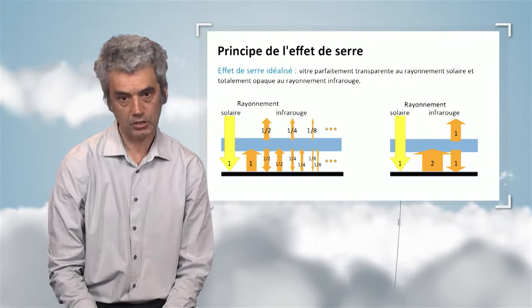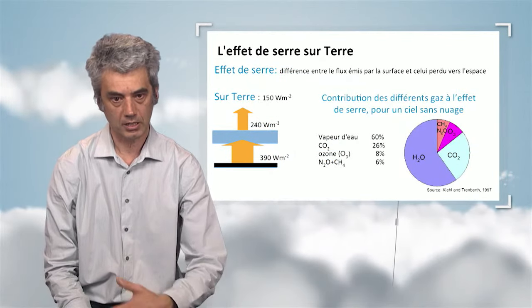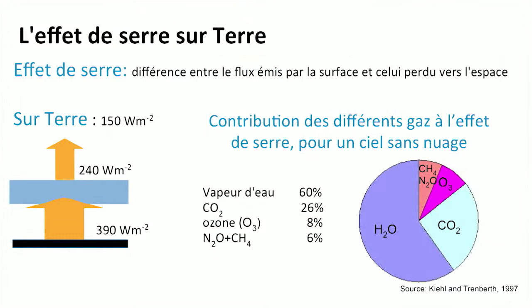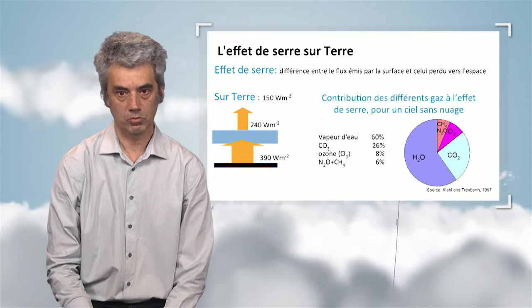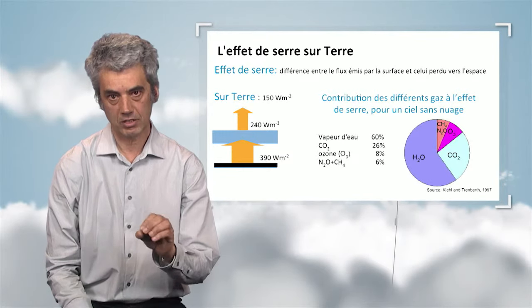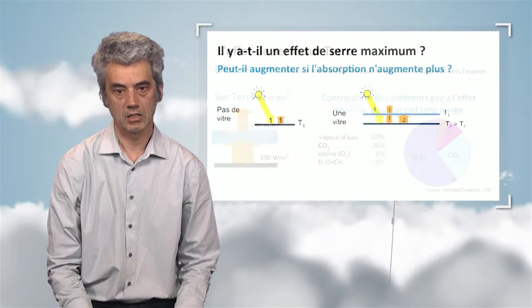All of this can be calculated very accurately for Earth. We know the properties of gases, some of which absorb infrared rays, and we can solve the radiative transfer equation and take measurements. The surface releases 390 watts per square meter and only 240 are released at the top, so the difference is trapped by the greenhouse effect. We can show that water vapor is the main greenhouse gas at about 60%, then CO2 accounts for about one quarter, and the rest is divided between ozone, nitrous oxide, methane, and other less important gases.